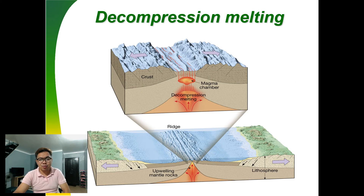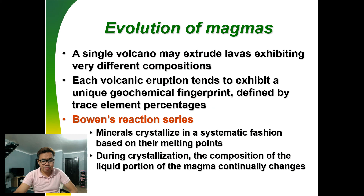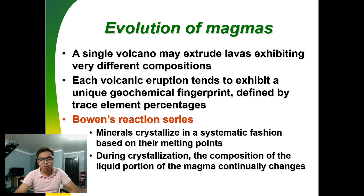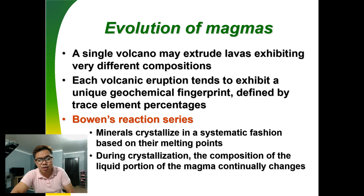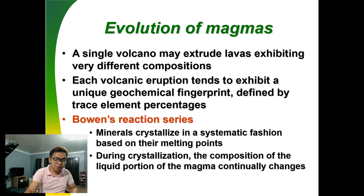This is called decompression melting. A single volcano may extrude lava exhibiting very different compositions. When volcanic eruptions exhibit a unique chemical and geochemical fingerprint, it determines the element percentages. According to Bowen, minerals crystallize in a systematic fashion based on their melting points, and during crystallization, the composition of the liquid portion of the magma continually changes.